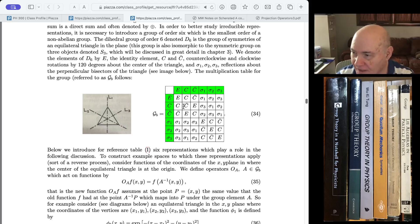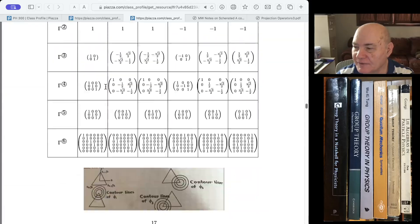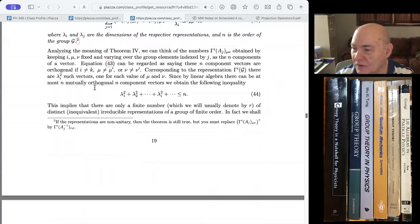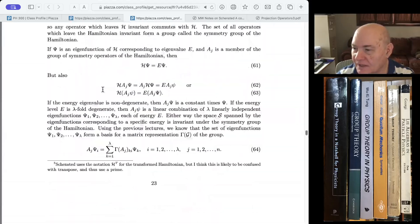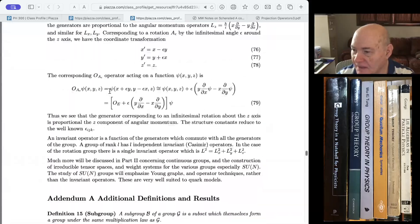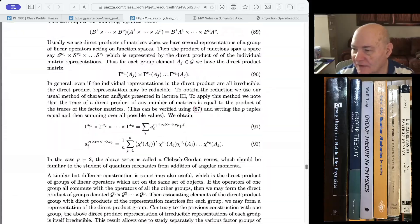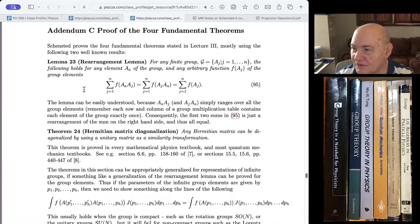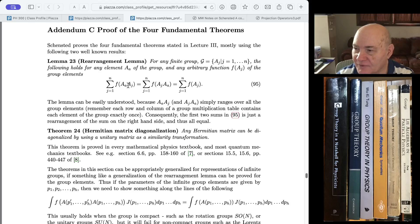So that's the rearrangement lemma that's used over and over and over again in proving theorems in finite group theory. I can't emphasize enough how important it is that you'll have an element, a specific element, multiplying another element, a general element. And we sum over all the general elements. And then it's just as if we didn't multiply.